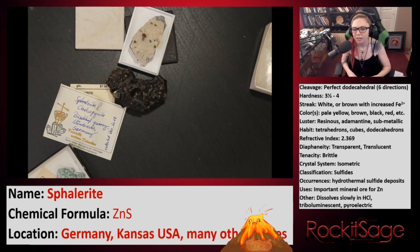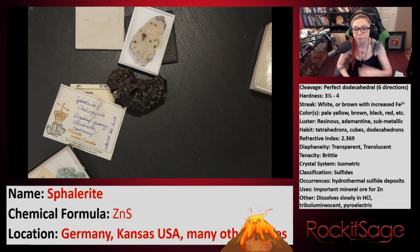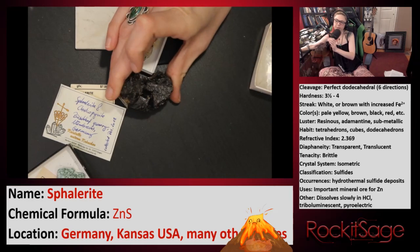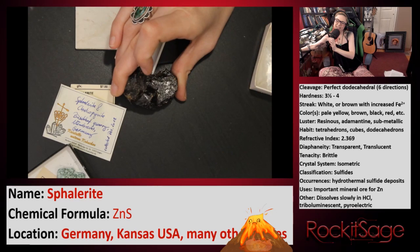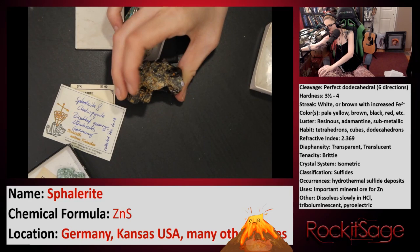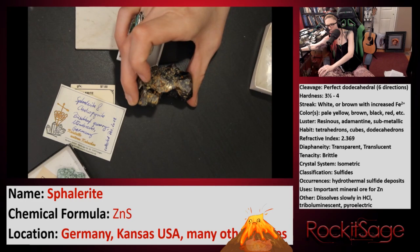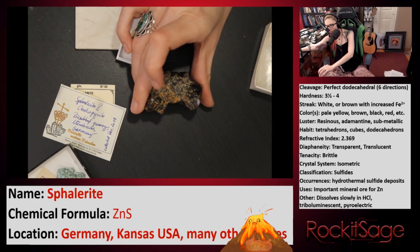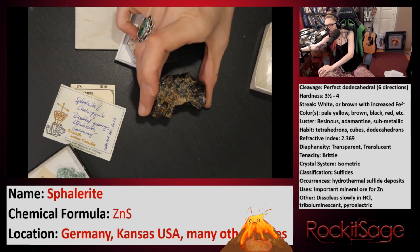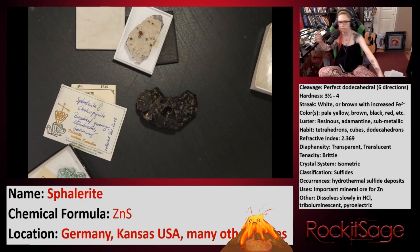Luster is resinous, adamantine, or submetallic. I would personally call the little red sample vitreous or maybe adamantine — it's very shiny. The other I would definitely call submetallic, with maybe some resinous areas on this side. You can see some definitely submetallic planes here. Good God, that's so pretty. Six planes of cleavage. This sample is only $7 — I'm proud of that find.